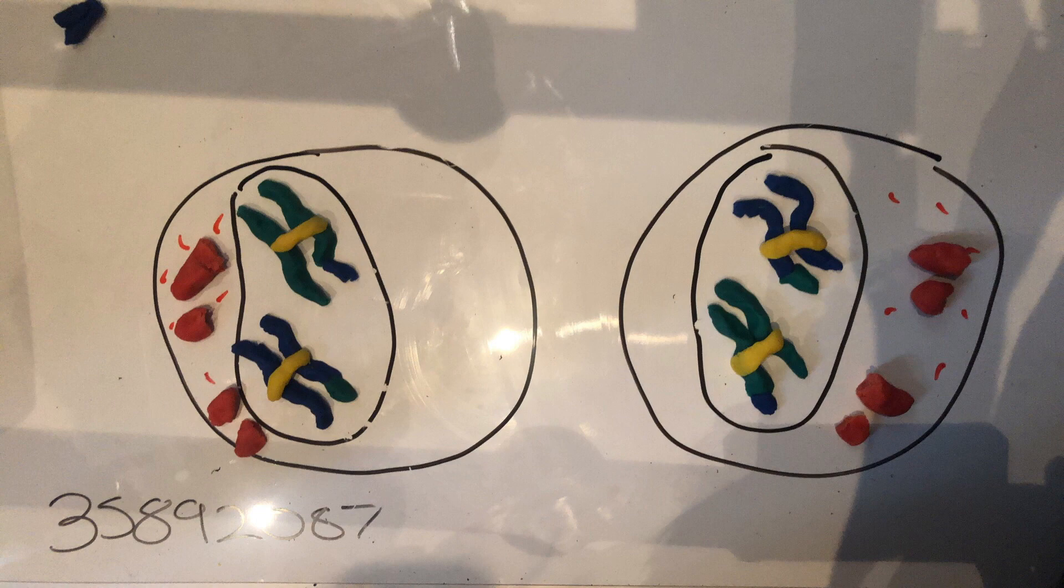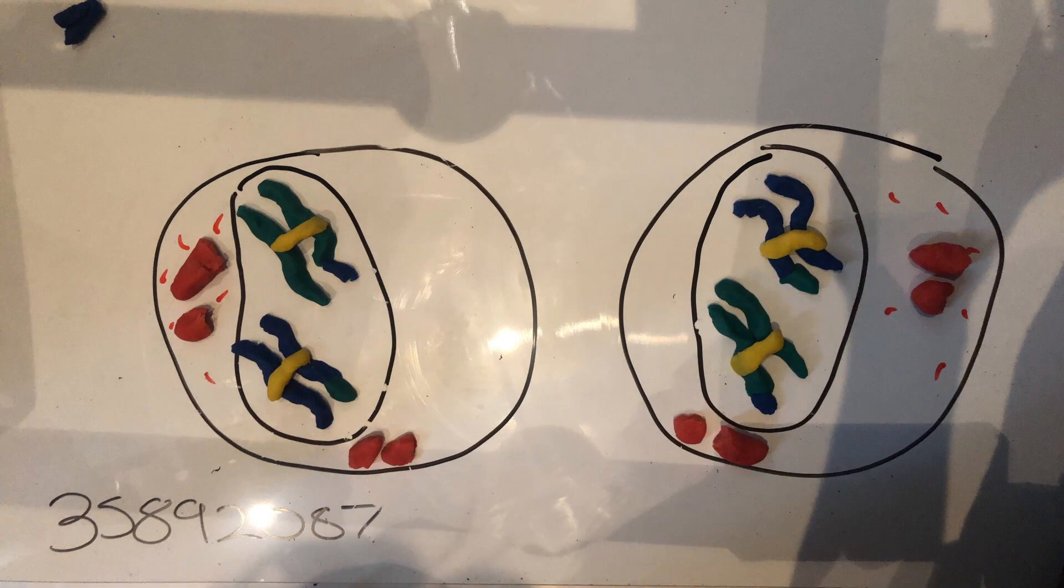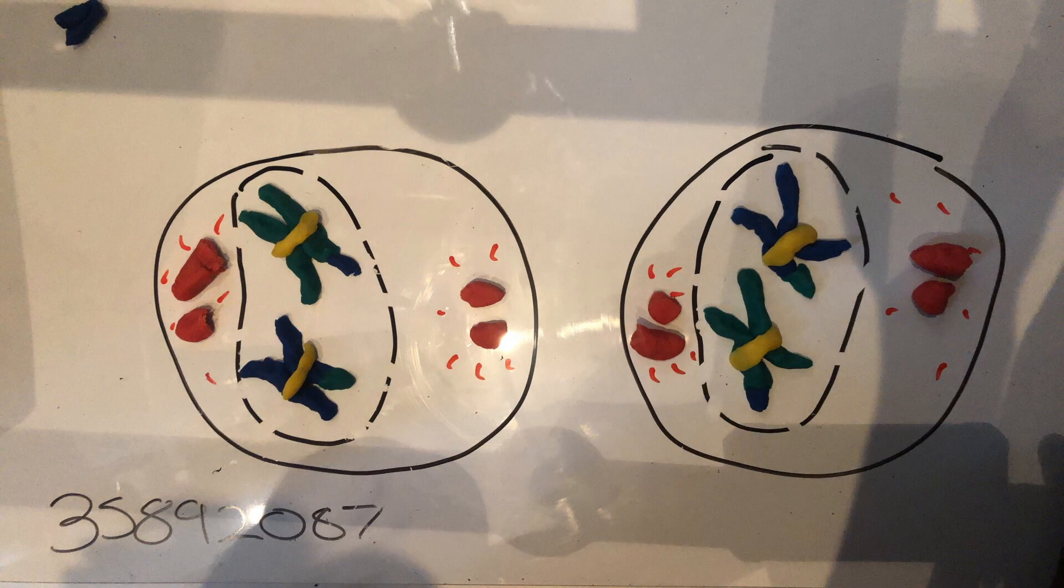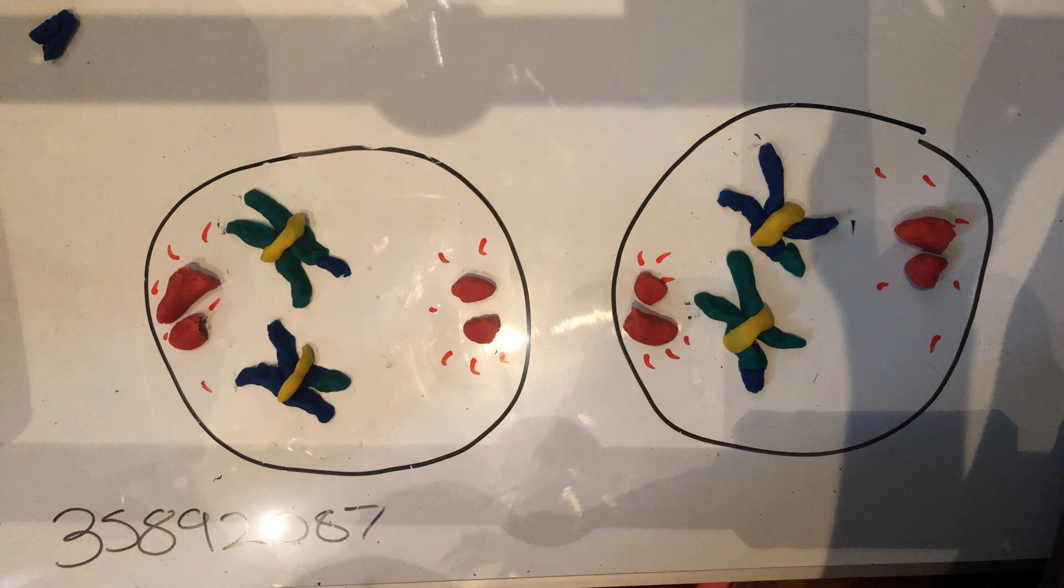Meiosis 2 begins with prophase 2, where the exact process that occurs in prophase 1 occurs. Once the centrioles have been duplicated within each haploid daughter cell and moved to either pole, sister chromatids have condensed, nuclear membrane has dissolved, and spindle fibers have formed, prometaphase 2 begins.